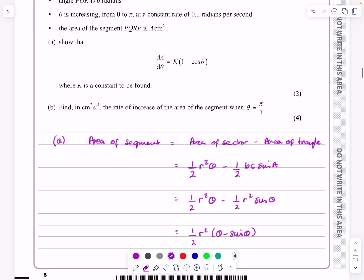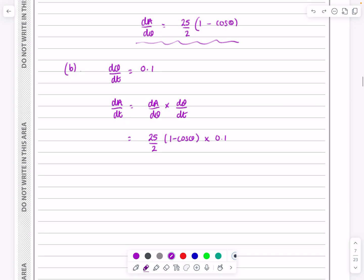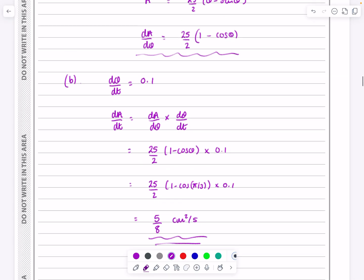Go back and read the question. It does say we want all of this when theta is equal to π over 3. So if I now put theta equals π over 3 in here, then 1 minus cos π over 3 all times by 0.1, and you can just do it on the calculator, it actually works out to be 5 eighths. Don't forget to put the units back in,